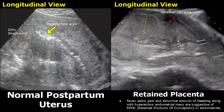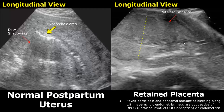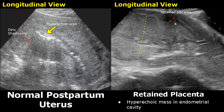Retained products of conception refer to retained placental tissue or fetal tissue in the uterus after a delivery or miscarriage. It is mostly associated with second-trimester miscarriage and placenta accreta. Fever, pelvic pain, and abnormal bleeding are suggestive of RPOC or endometritis. A retained placenta will appear as a hyperechoic mass in the endometrial cavity — we can see this large hyperechoic mass with an enlarged uterus.